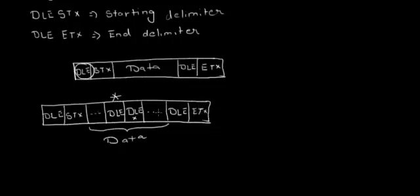This frame, when received at the receiver's end, would be read as follows: the receiver looks at the data in the frame, and whenever it encounters two back-to-back DLE characters, it understands that this is an escape sequence and that the one DLE that occurs is actually part of the data and not the end of the frame. This is how this can be resolved.